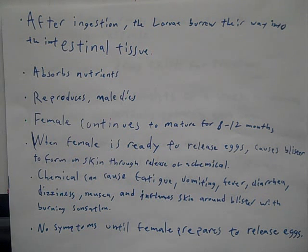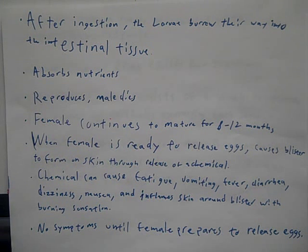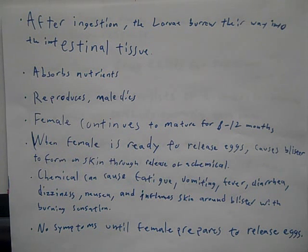After the larvae are ingested, they bury themselves into intestinal and stomach tissue. From there, they absorb nutrients and begin to mature very slowly. After a period of roughly three months, the male and female reproduce, after which the male dies. But the female continues to mature for an additional eight to twelve months.